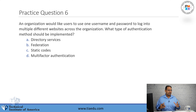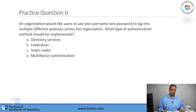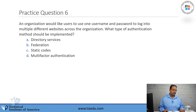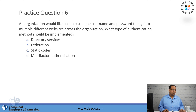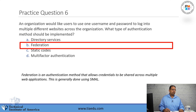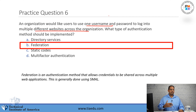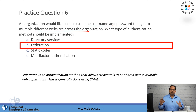Question number six: an organization would like to use one username and password to log into multiple different websites across the organization. What type of authentication method should be implemented? A, directory services. B, federation. C, static code. D, multi-factor authentication. The answer is B, federation. Federation, using technology like SAML, allows you to use one username and password to log into multiple different web applications.